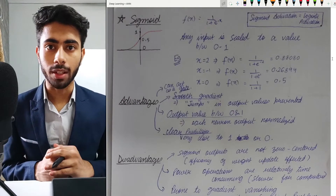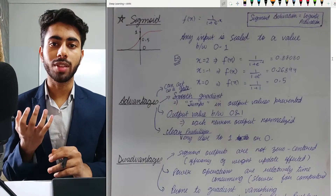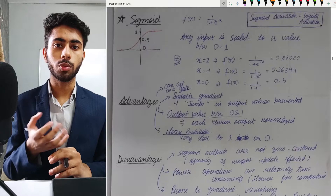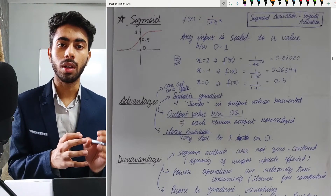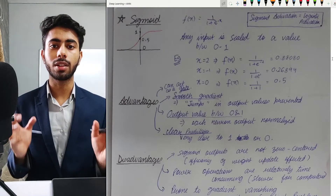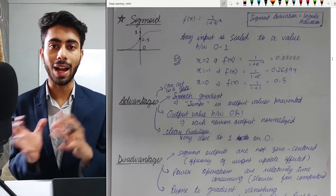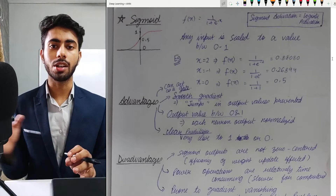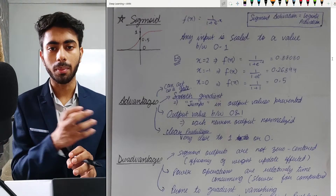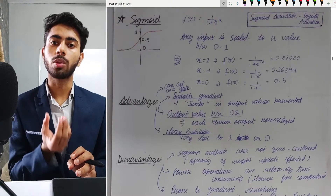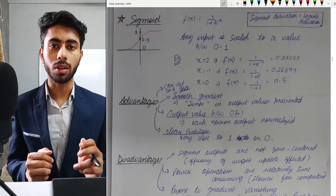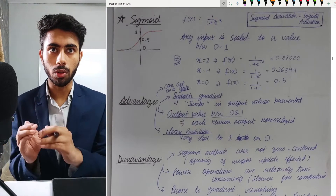The job of the sigmoid activation function is to scale down inputs to the range of 0 to 1. Whatever input you give to your sigmoid activation function, it will scale it down to values between 0 and 1 — whether you put a very large negative number, a small negative number, a very large positive number, or a very small positive number.